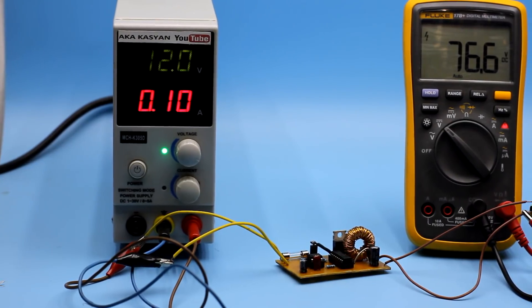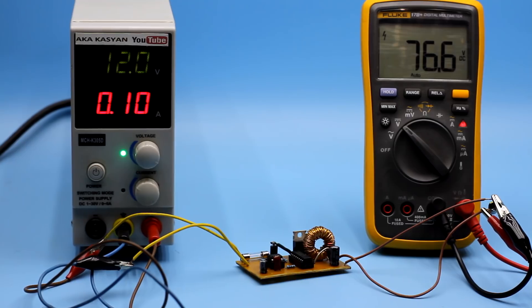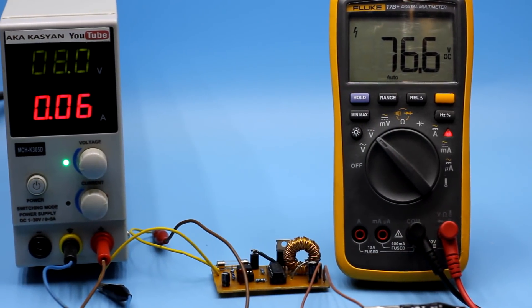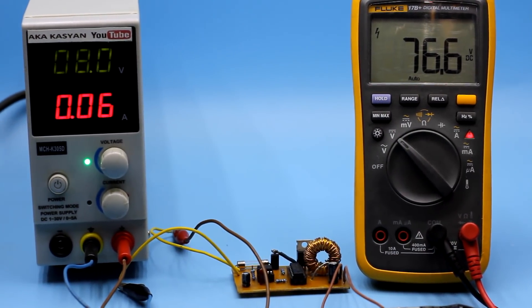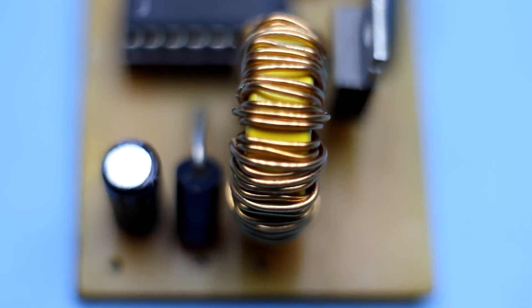I connected the storage capacitor to the output of the circuit and it became clear that the amplitude value of the output voltage, when powered from a 12V source, reaches 70 to 75V and depends on the inductance of the storage throttle.